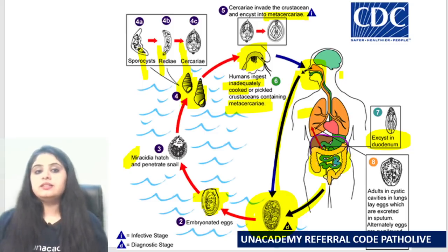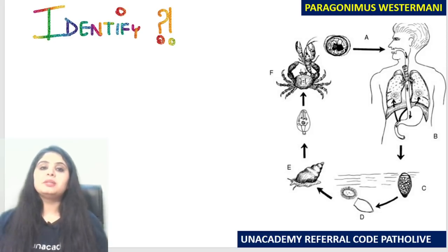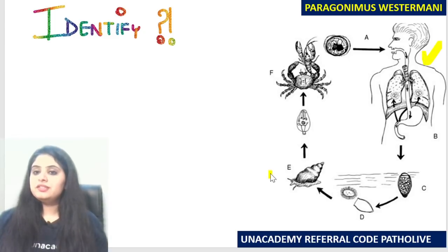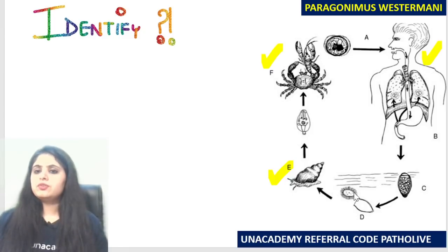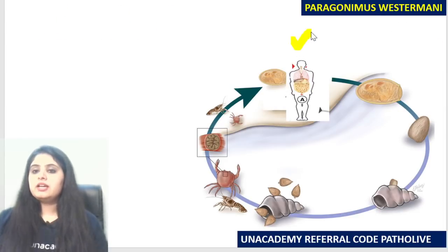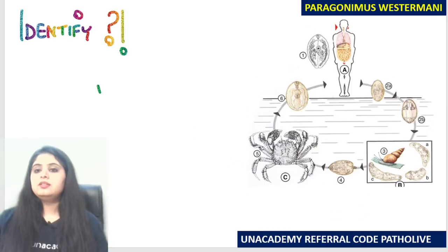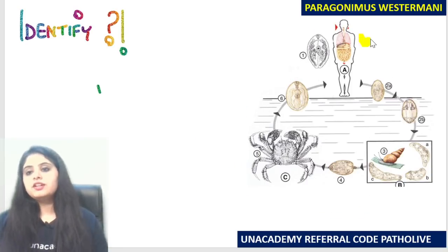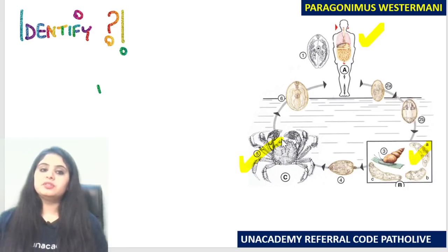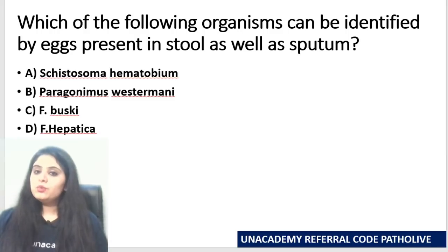Even with an unlabeled life cycle diagram in an exam, it's quite easy once you identify the hosts. You see a human, a snail, and a crab — that's your key. You can trace: egg comes out of the human, something hatches and goes into the snail, then to the crab, and back to the human. Different pictorial representations of Paragonimus westermani all follow this same pattern — picking up the hosts is essential.